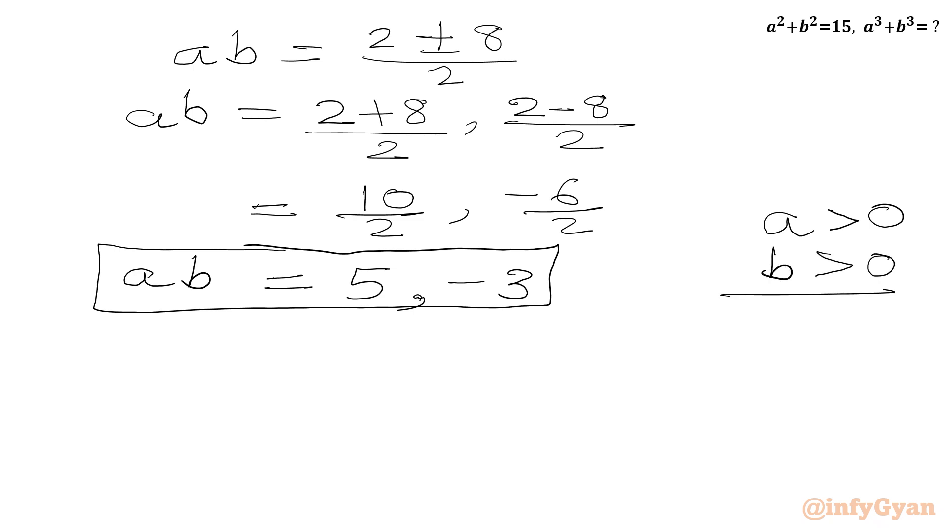Once I multiply these two inequalities, I can write ab must be positive. So on this ground, ab should be positive, we can reject the negative value minus 3. So our accepted ab would be 5.